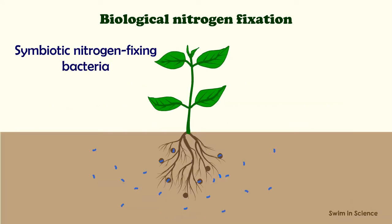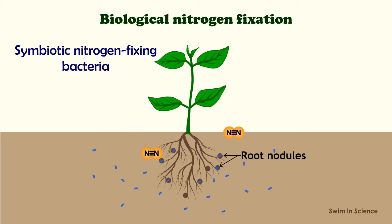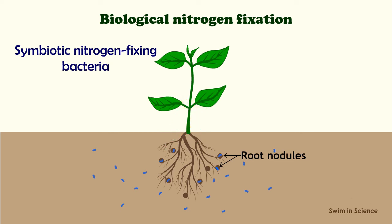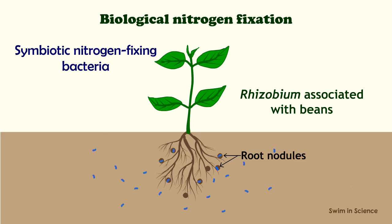The symbiotic nitrogen-fixing bacteria invade the root hairs of plants where they multiply and stimulate the formation of root nodules. Within the nodules, the bacteria convert free nitrogen to ammonia, which the plant utilizes for its development. In turn, plants provide shelter and fixed carbon to the bacteria. For example, Rhizobium, associated with leguminous plants such as beans.